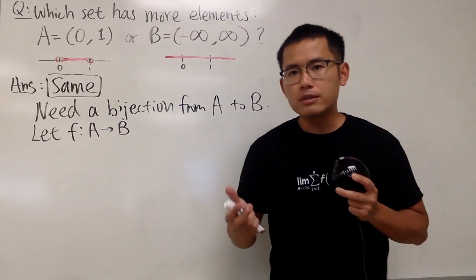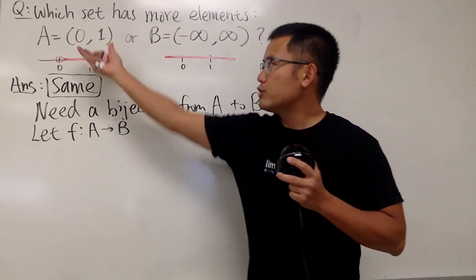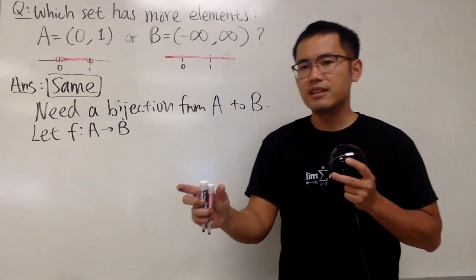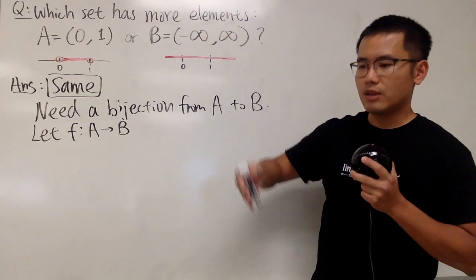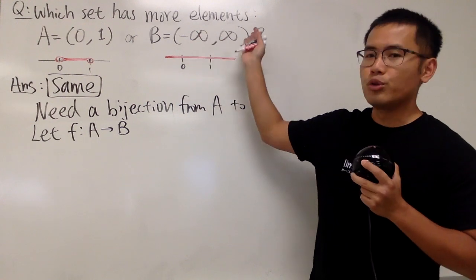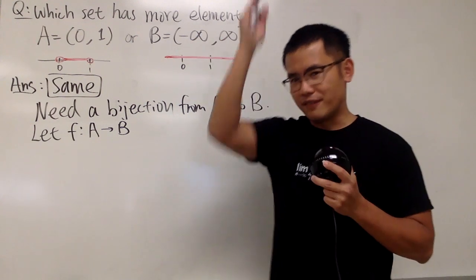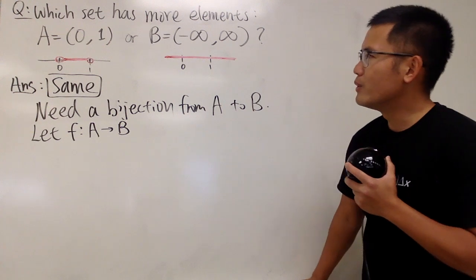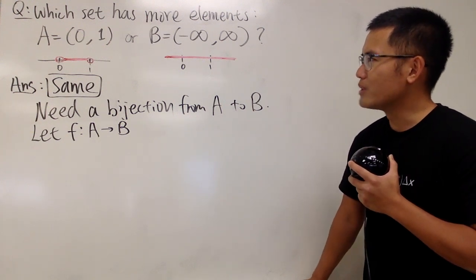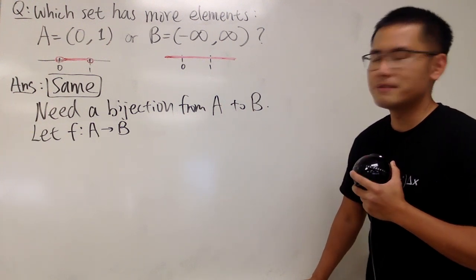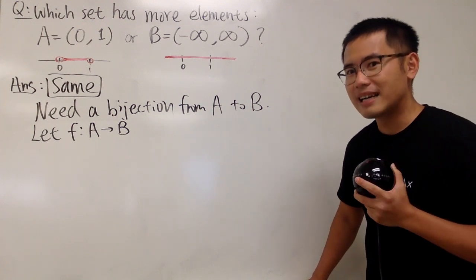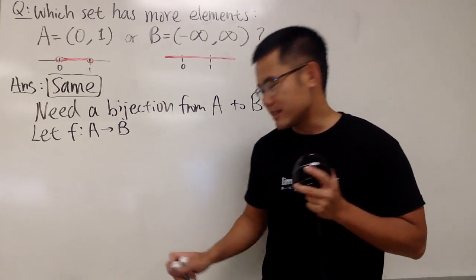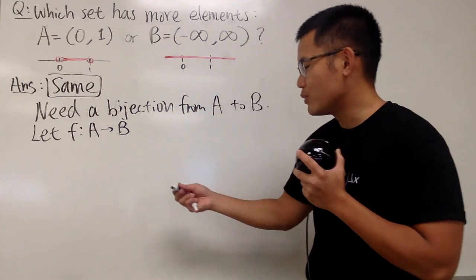Okay, now we have to think about how can we go from 0,1 to negative infinity to infinity. If you think about the graph of a function, this right here is a domain, so it's just on the x-axis, so you just have a small piece, and this right here is on the y-axis, so you want to go from negative infinity to positive infinity. We better have some vertical asymptotes to help us out. We have to think about how can we use a function that has such a property for this. We do know a function from our trig class, namely tangent x.